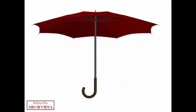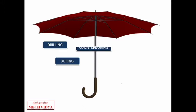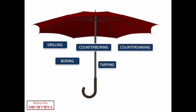Starting from drilling a new hole, we have boring operations where we enlarge the previously drilled hole. Now counter boring and countersinking are two different variants of the boring method. Then we have tapping methods which are used to make internal screw threads in a hole, followed by reaming which is used to finish a previously drilled hole.